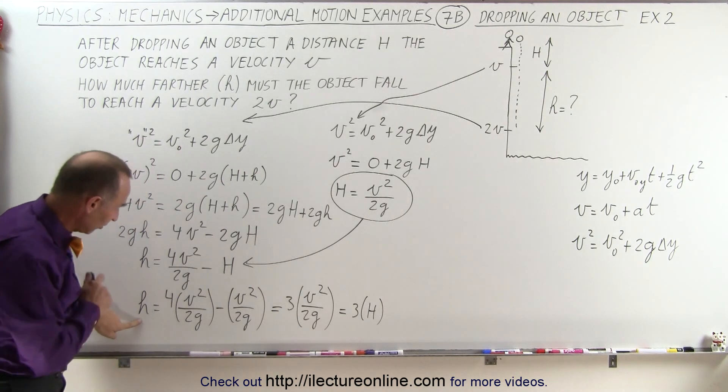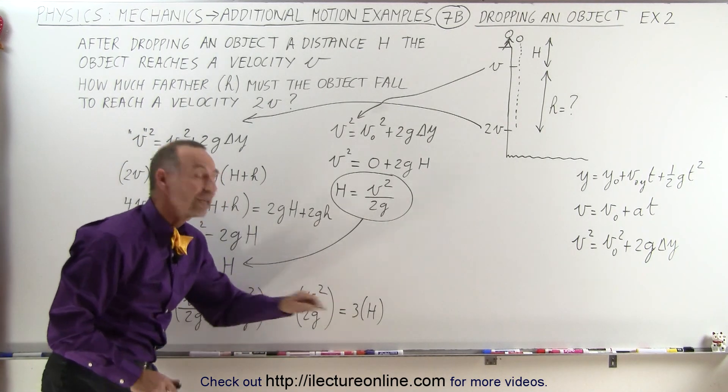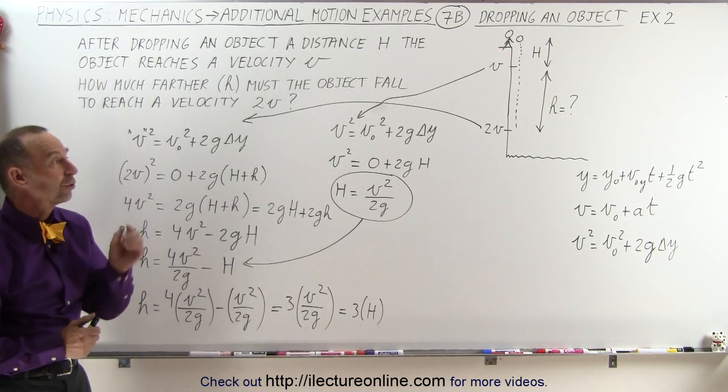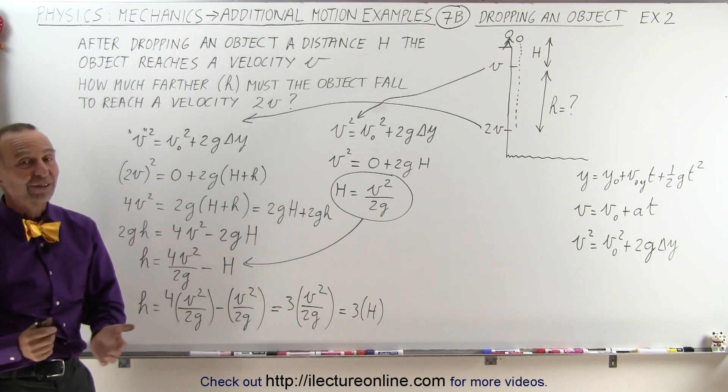And the additional distance h is going to be 3 times the amount that you had to fall to reach v. And that's how it's done.